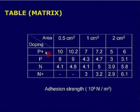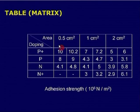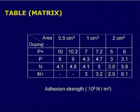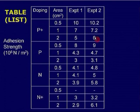If I want to see how the substrate condition affects adhesion, I pick a fixed area — say 0.5 centimeter square — and find values of 10 for P plus, 8 for P-type, and 4.1 for N-type. There seems to be a pattern that as the conductivity changes from P-type to N-type, the adhesion decreases. Moving vertically gives one pattern as a function of substrate condition; moving horizontally gives another as a function of area — something not evident in the list form table.